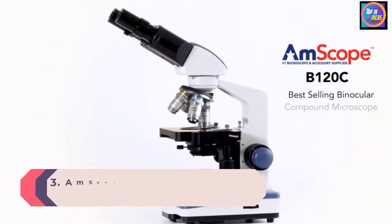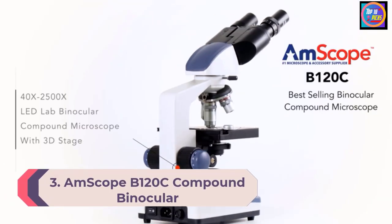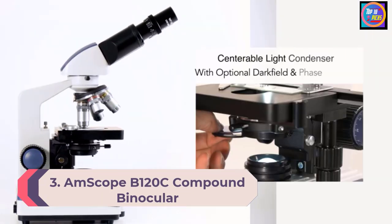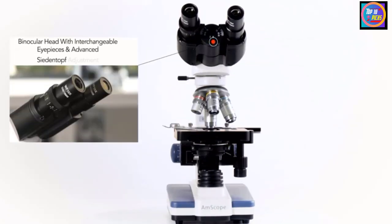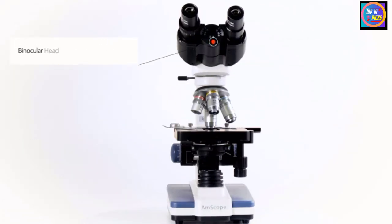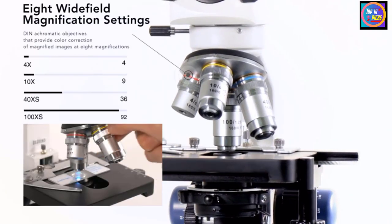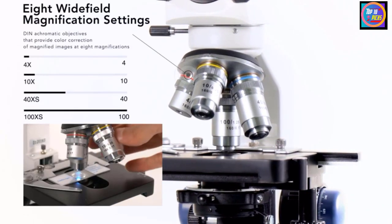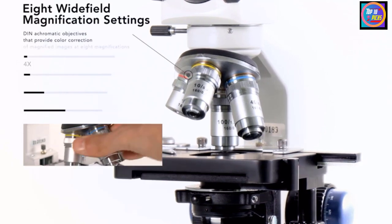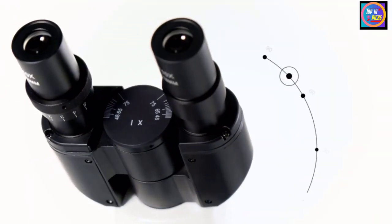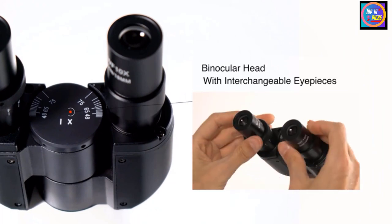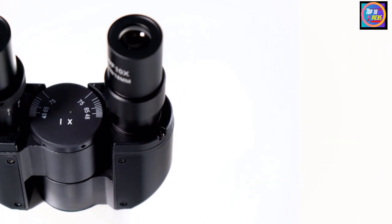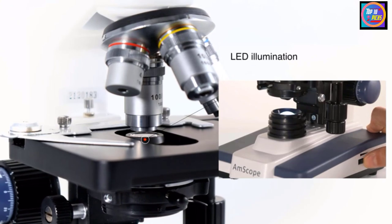Number 3. Ampscope B120C Compound Binocular Microscope. This microscope offers a high magnification of 2500x, which allows you to observe your object in great detail, especially for use in a laboratory. The Ampscope features a binocular head that can be adjusted between 53-77mm for convenience and easy use for each person. This feature also considers people's different eye strengths and makes it a suitable purchase for almost anyone.